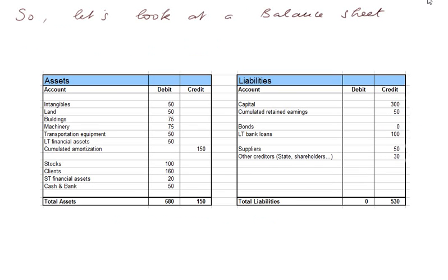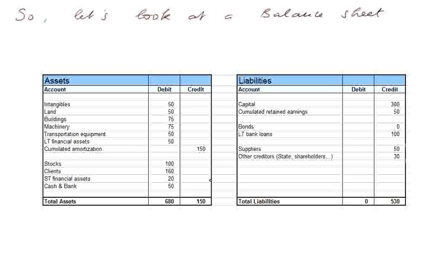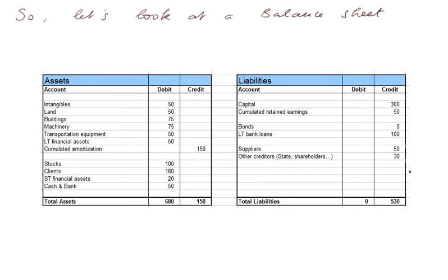So, let's look at the balance sheet, the asset side and the liability side. On the asset side, the top part is called the fixed assets, and when we include the cumulative amortization, the net fixed assets. And the rest is called the current assets, made of stocks, client IOUs, cash and bank, and quasi-cash, that is short-term financial assets, cash parked in order to create some revenues.